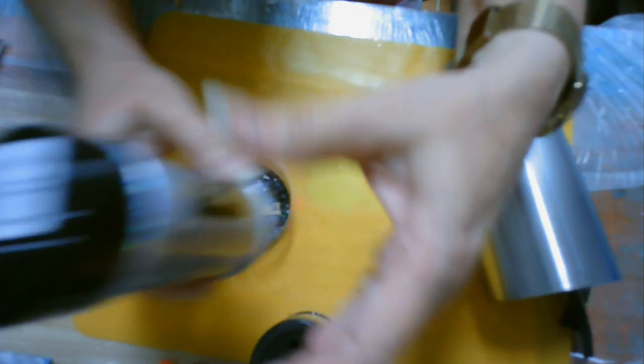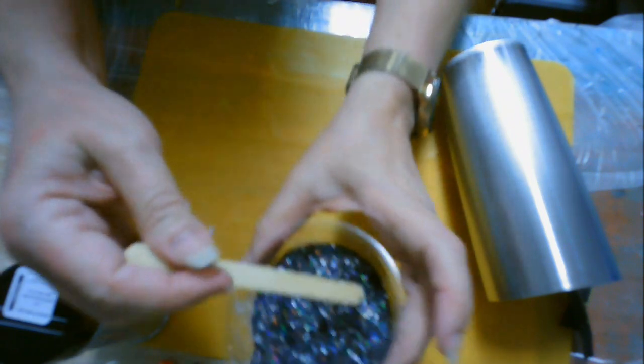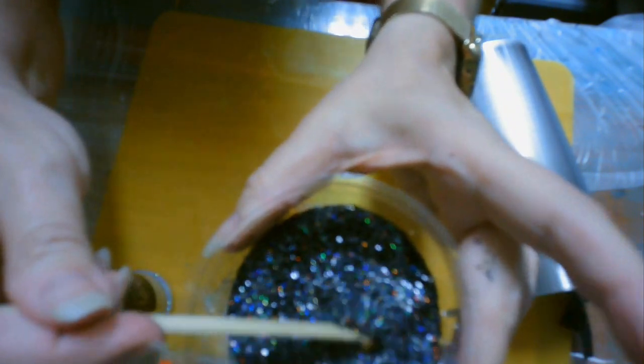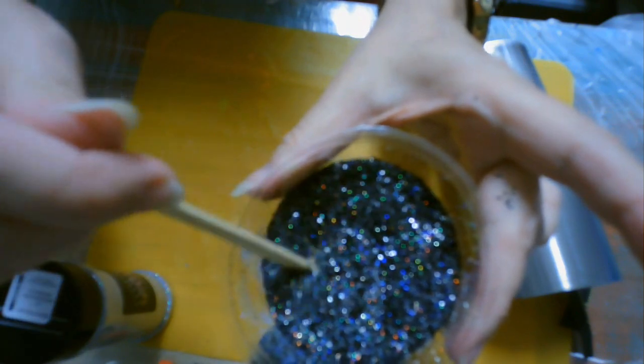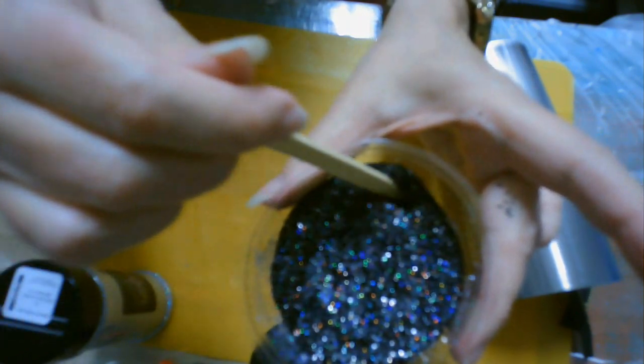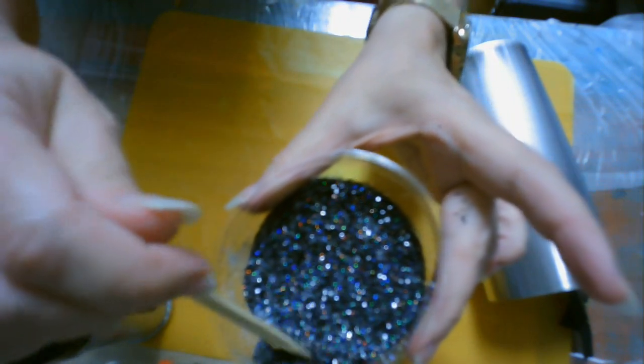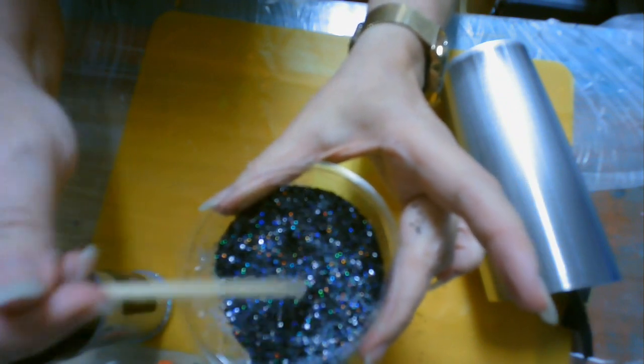And the reason why I mixed it is this black is really pretty, but once you put the resin over it, it kind of loses its sparkle. And you can see that holographic silver with the reds and the blues and the greens in there.